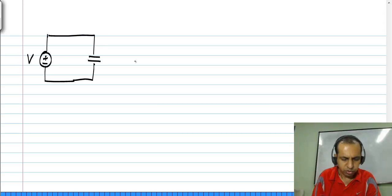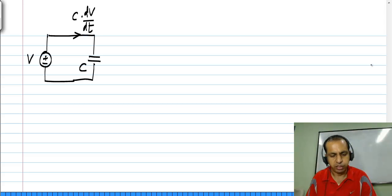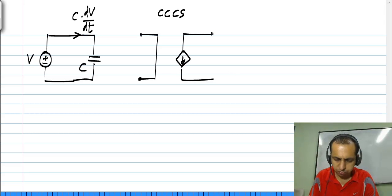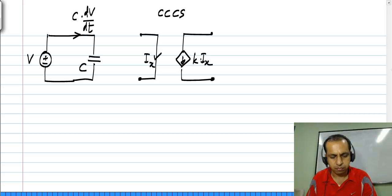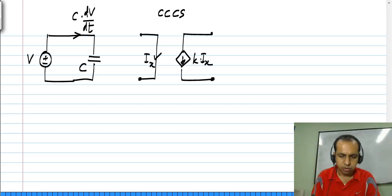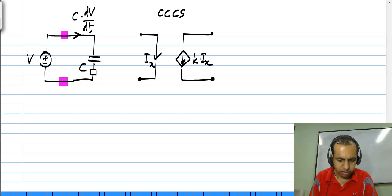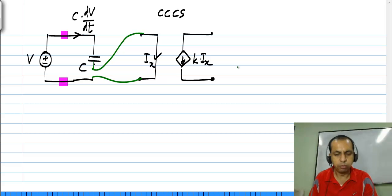Let us say I connect a voltage source V across the capacitor C, and this draws a current C times the time derivative of V. Now, I have a variety of control sources, but for now let me consider a current-controlled current source. Let us say this is I_x and this is some k times I_x. I will sense the current flowing through the capacitor using the input branch of the current-controlled current source.